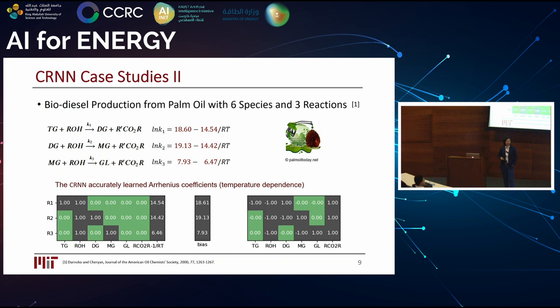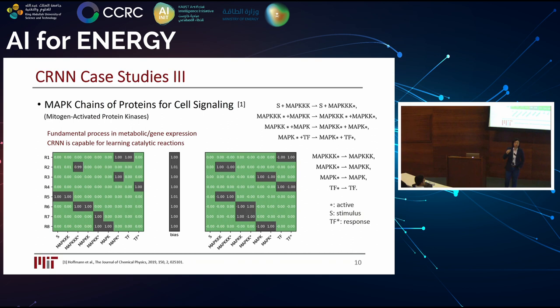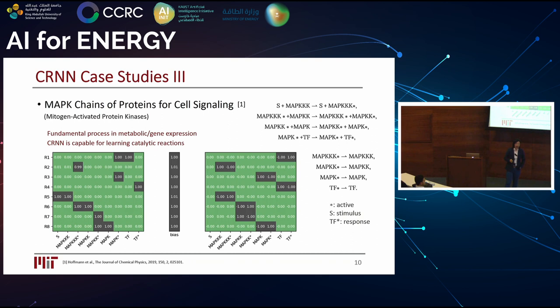We also demonstrate this neural network in biochemical systems, particularly cell signaling. It involves reactions associated with proteins, some of which act as enzymes — they appear both as reactants and products. Even with these hidden species that we don't have physical formulas for, we are still able to capture the interactions between them and figure out the chemical reaction rate associated with this very complicated catalytic system.